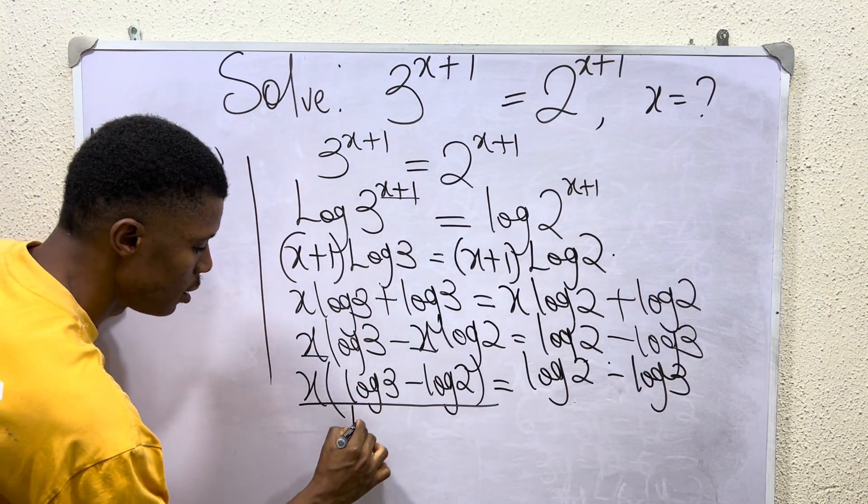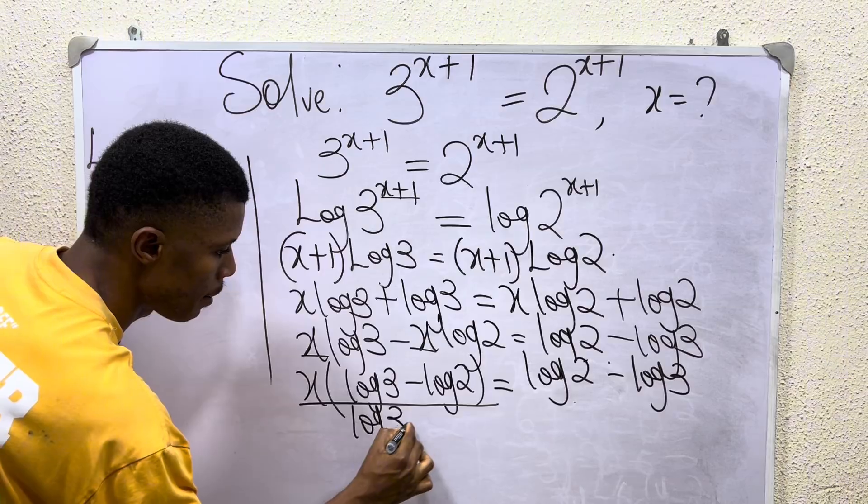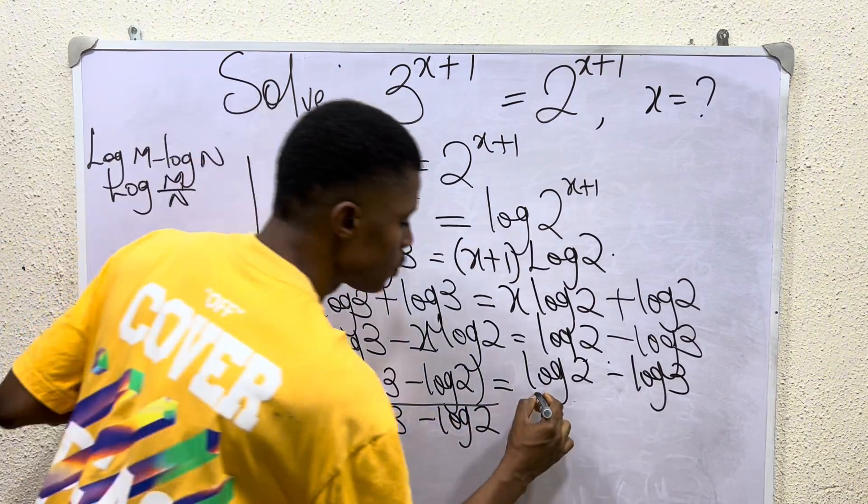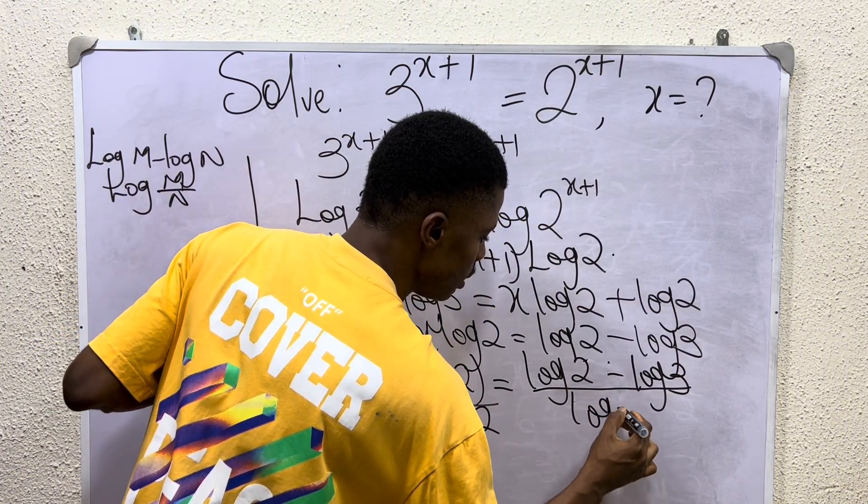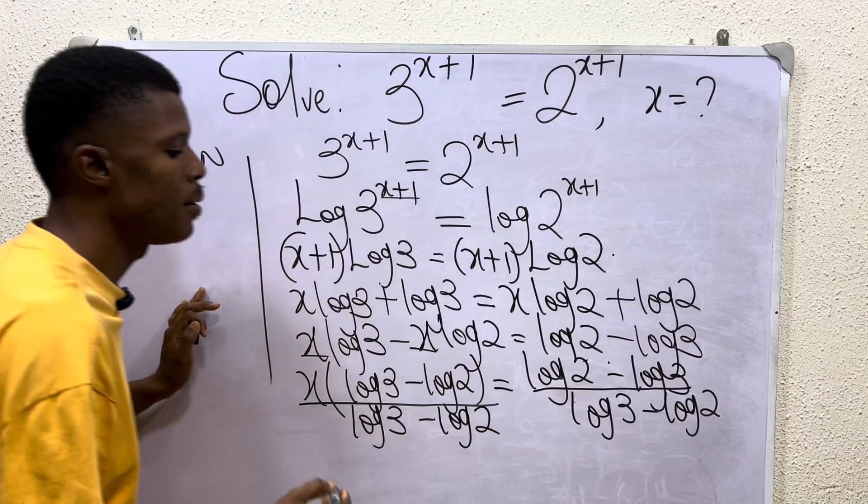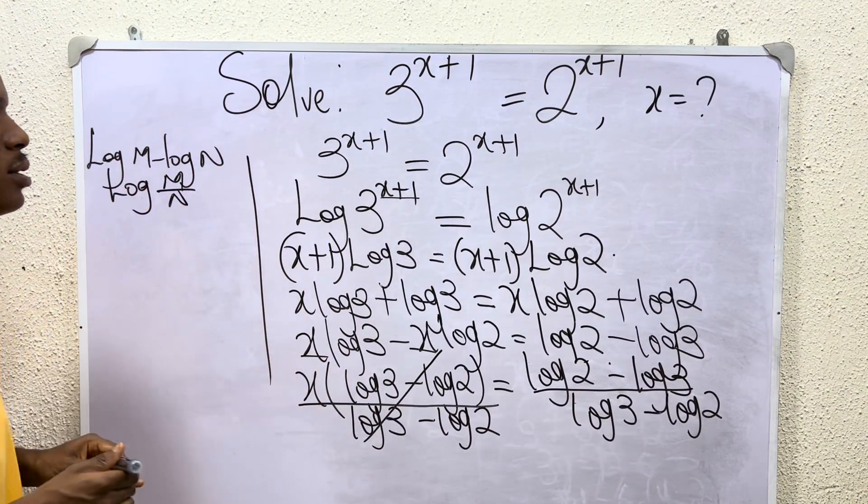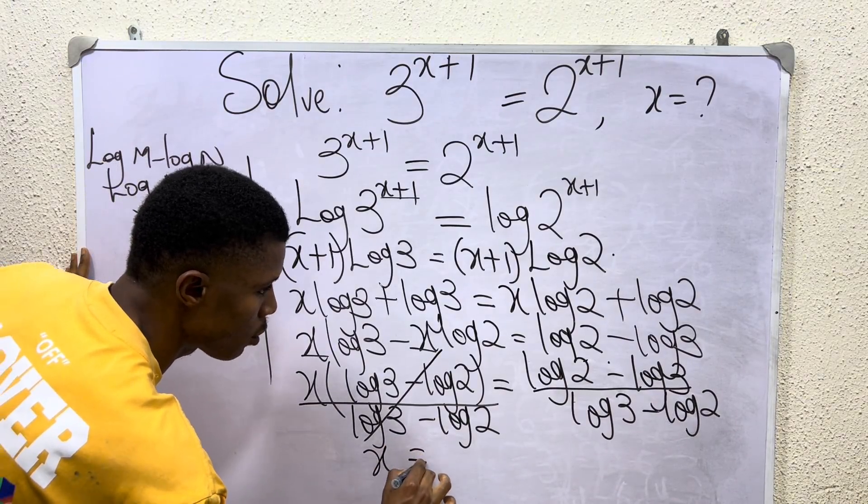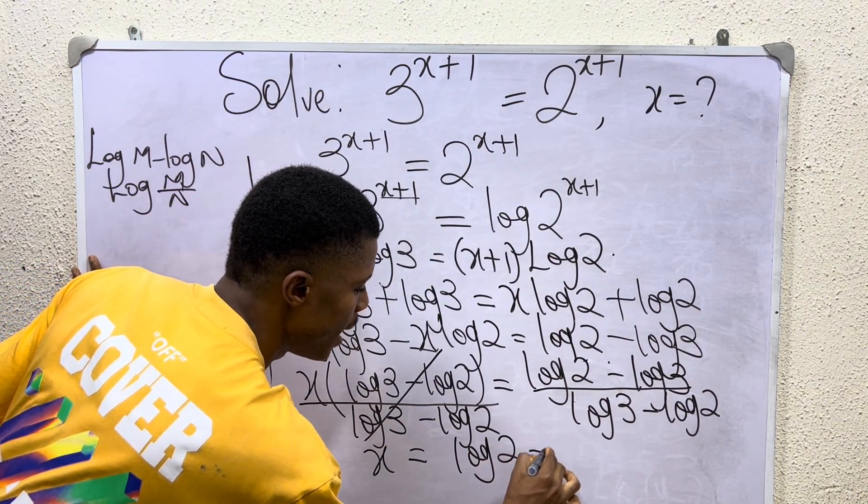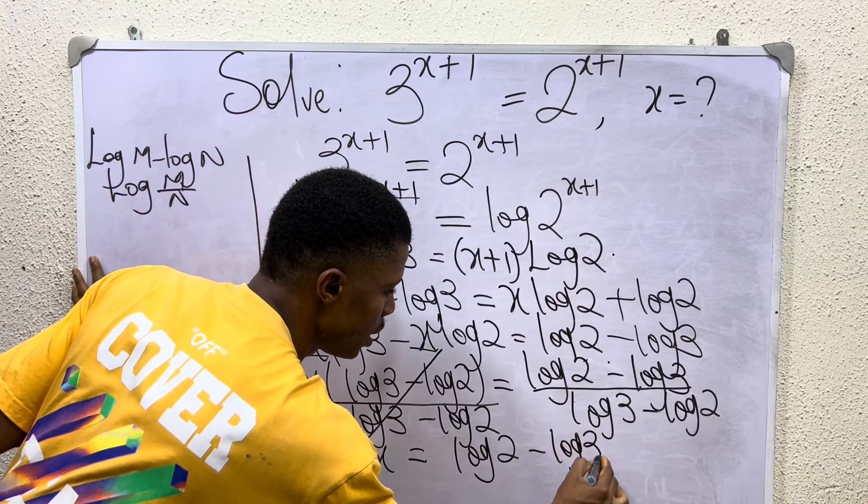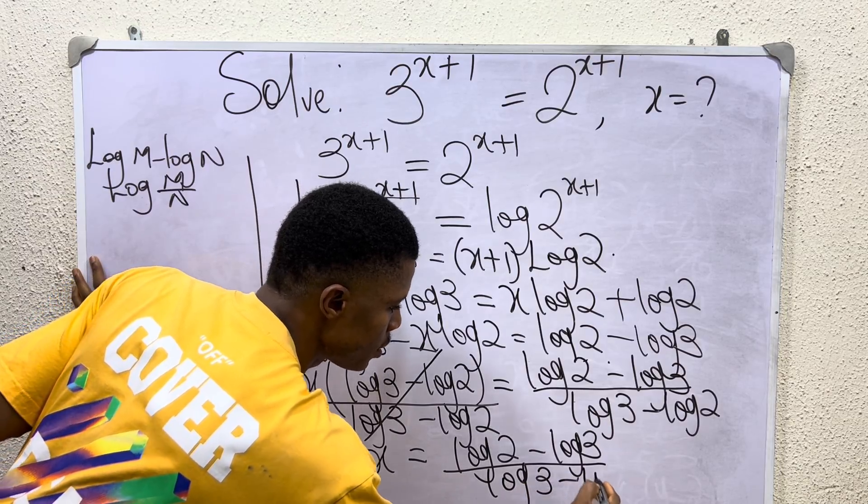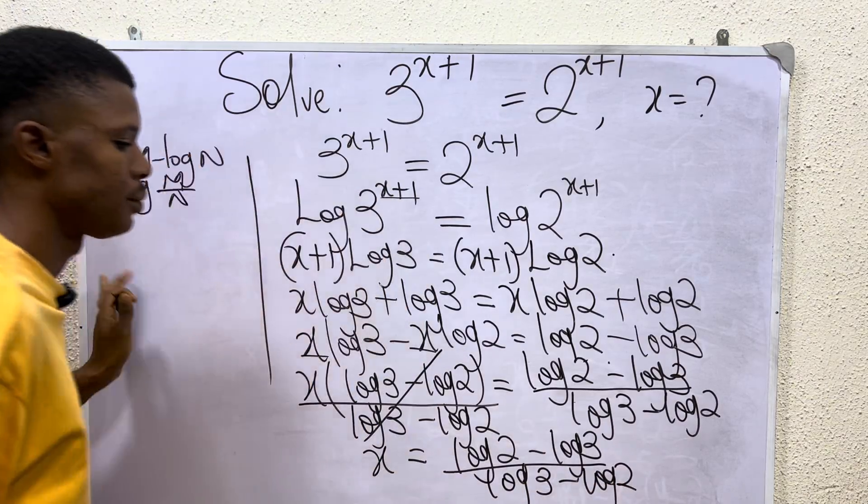Okay, the next thing I have to do is to divide through by log 3 minus log 2. So I can easily cancel out the logs. Observe that x is equal to (log 2 - log 3) divided by (log 3 - log 2).